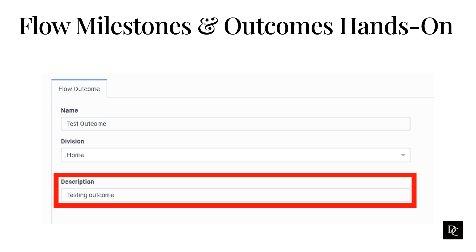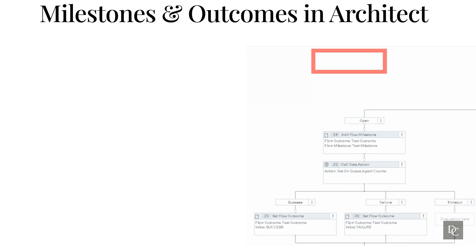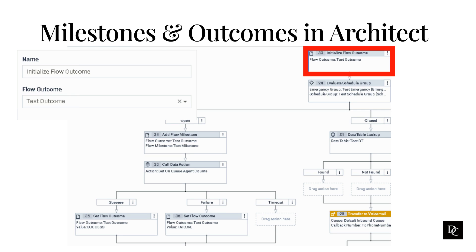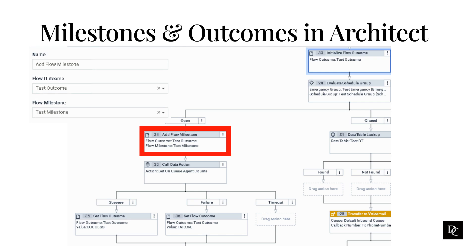Now let's see how what you just created is implemented in Architect. Use the Initialize Flow Outcome action to choose a flow outcome that Architect begins to track in the flow. This action is available in the flow category of the task editor's toolbox for call, chat, email, and messaging flows, excluding in-queue call flows. When an interaction encounters this action, Architect creates a date and time starting point for the outcome. In the name field, type a distinctive name for the action or leave the default text. In the flow outcome field, click the list and choose the outcome Architect begins to track. Use the flow milestone action to generate more granular reporting for flow outcomes — access to flow milestones helps build reporting around the customer journey.